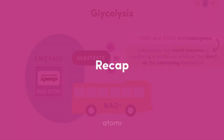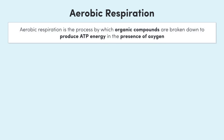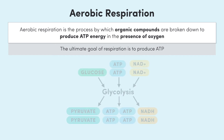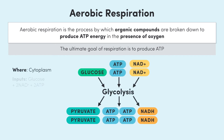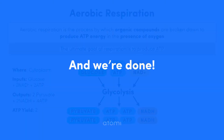That's glycolysis finished. Let's quickly recap before we finish up. Aerobic respiration is the process by which organic compounds are broken down to produce ATP energy in the presence of oxygen. The ultimate goal of respiration is to produce ATP. Glycolysis occurs in the cytoplasm of the cell. One glucose molecule, two NAD+, and two ATP molecules go in, and two molecules of pyruvate, two molecules of NADH, and four molecules of ATP come out. So overall, the net ATP yield is two. In the next videos, we'll cover the rest of aerobic respiration, looking at the Krebs cycle and the electron transport chain.